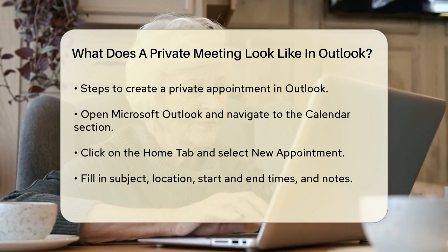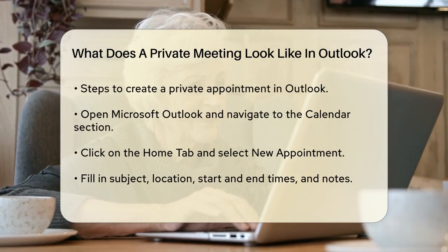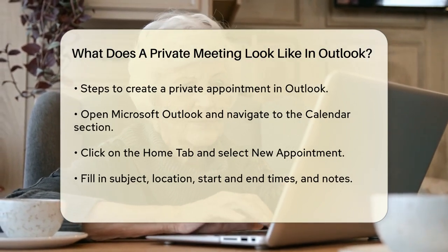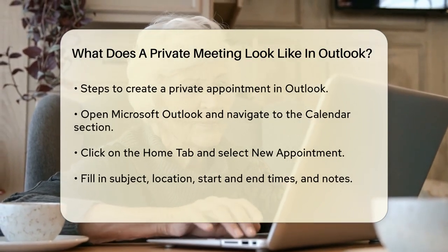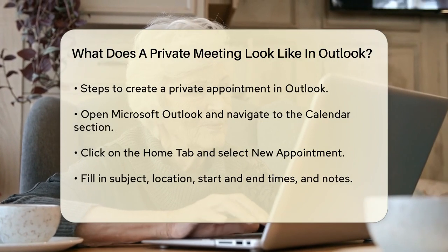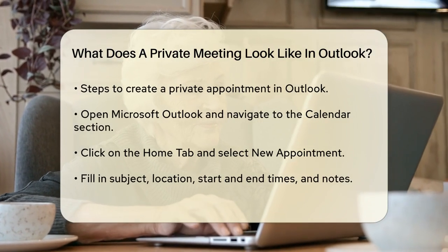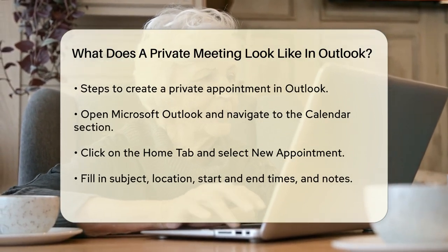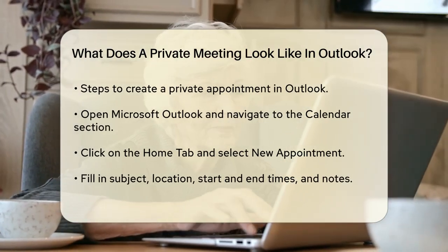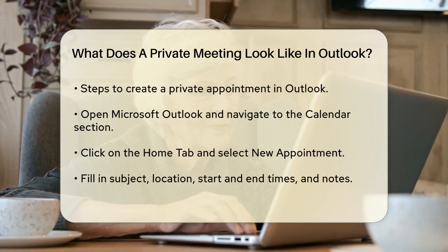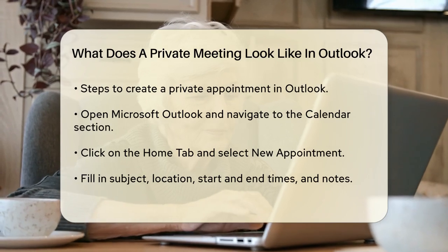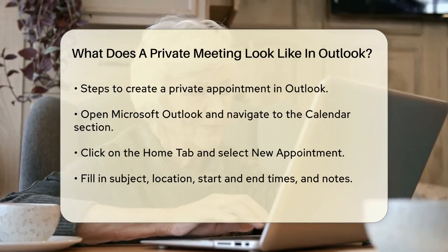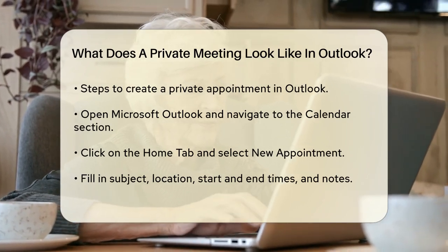To create a private appointment, you start by opening Microsoft Outlook and navigating to the Calendar section. Then click on the Home tab and select New Appointment. Fill in the details such as the subject, location, start and end times, and any notes you might need.